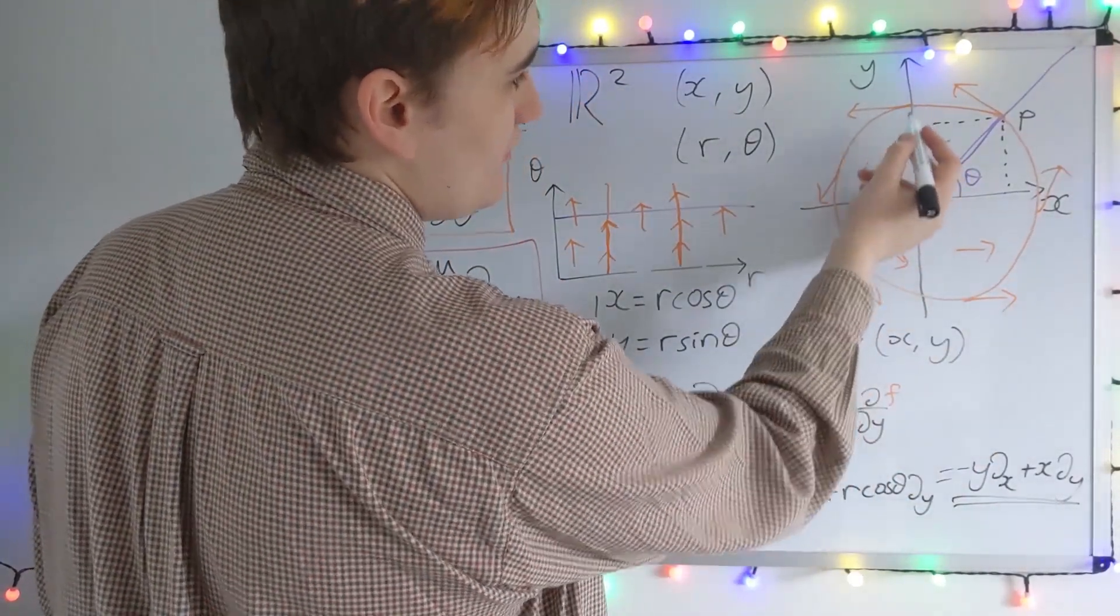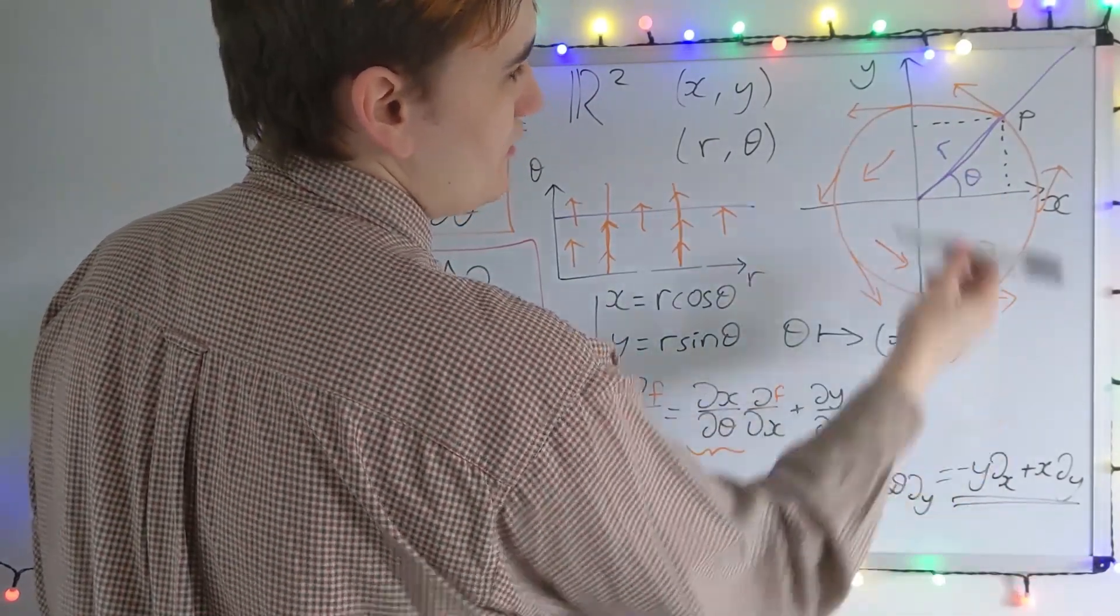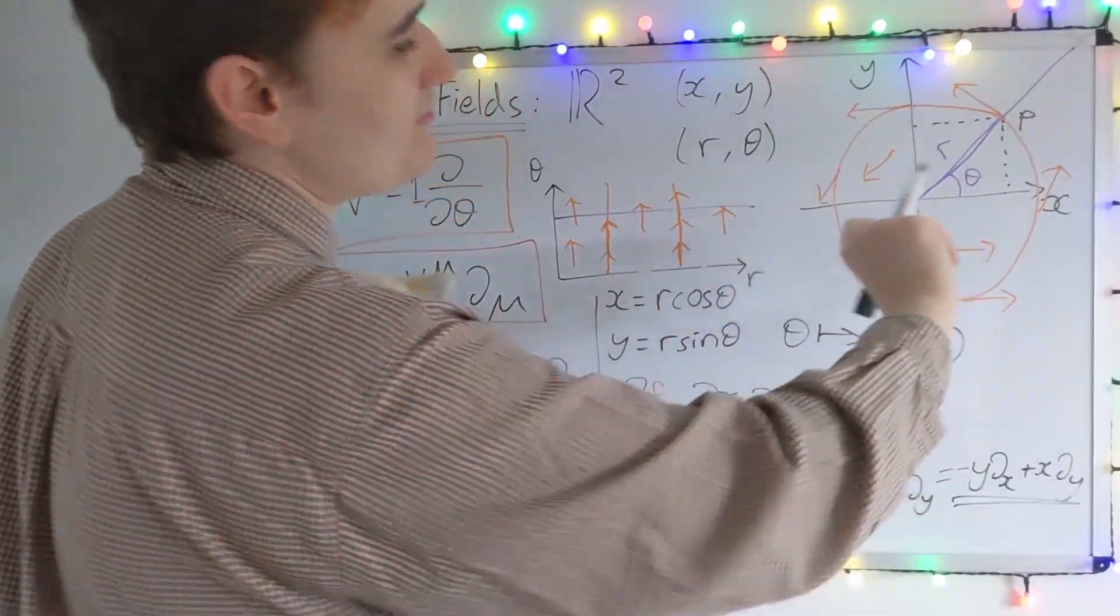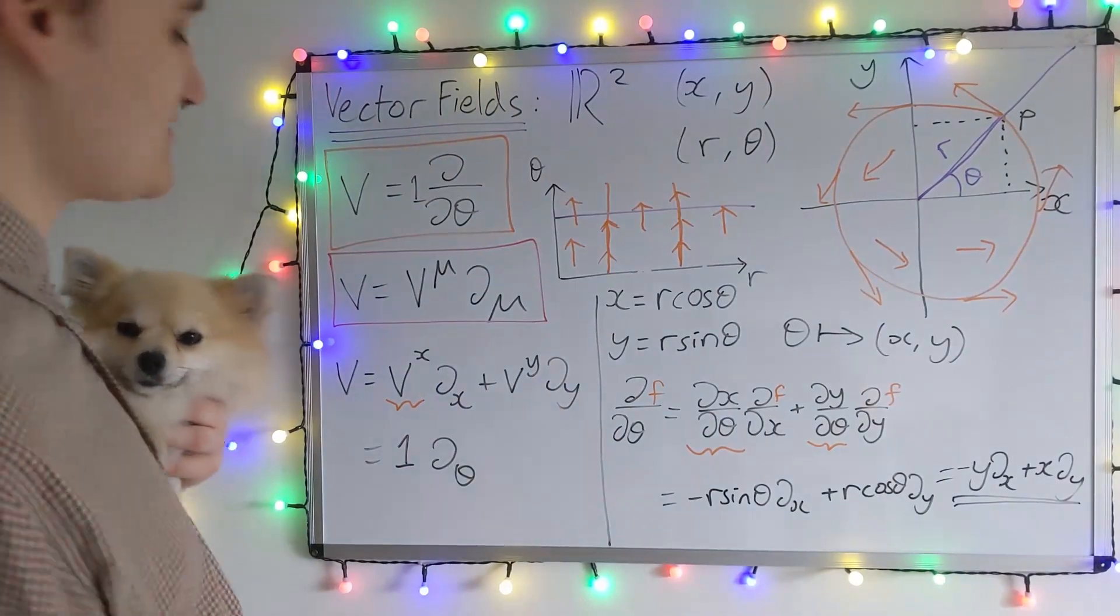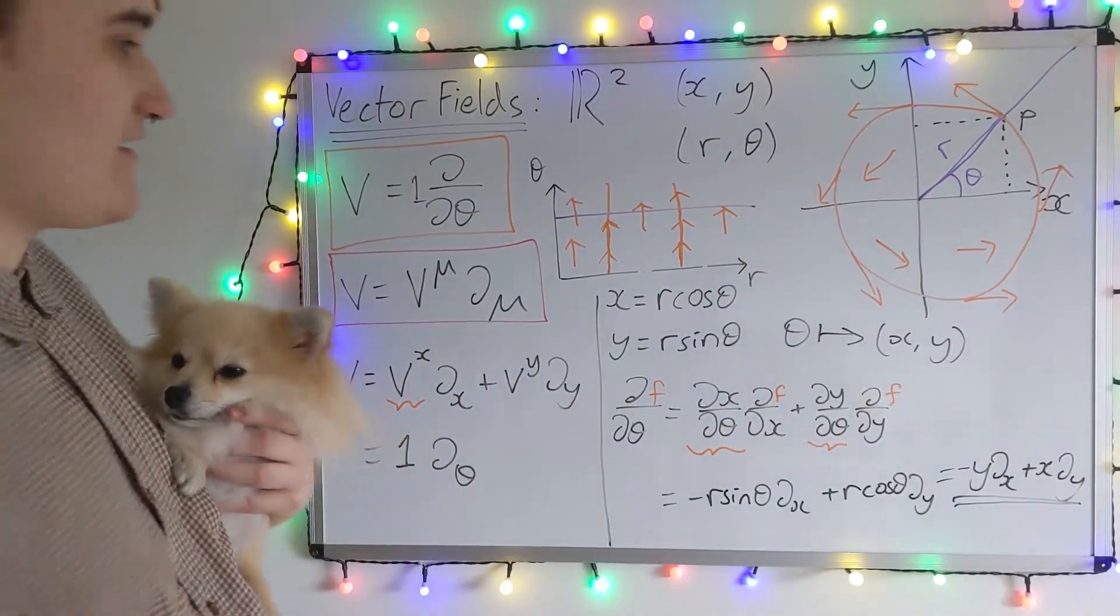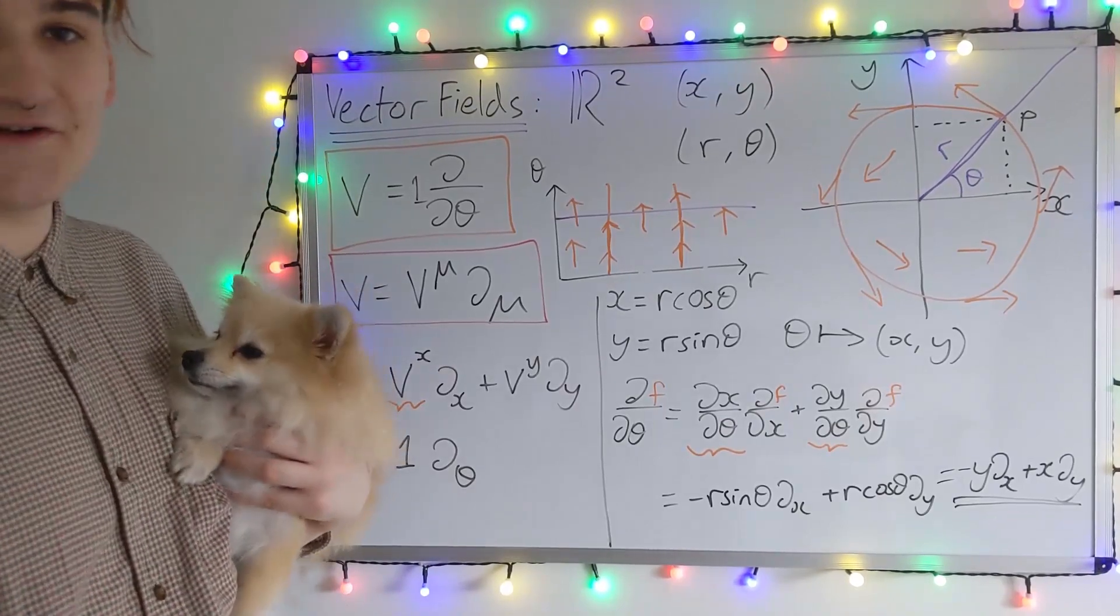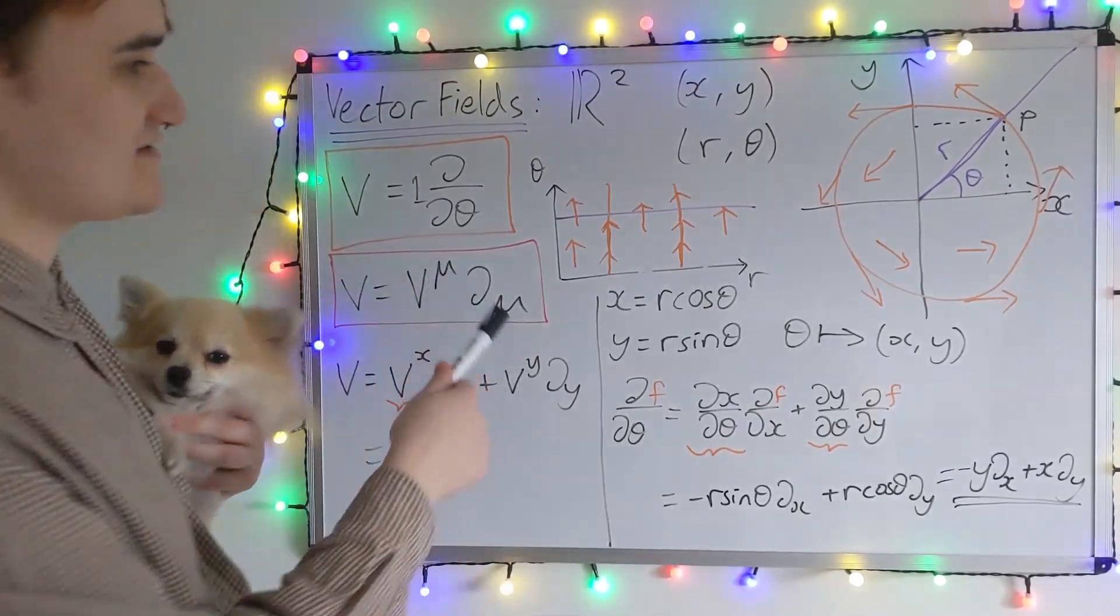Similarly, if we go up to here, Y is 1, X is 0, we just have a vector pointing along negative D by DX. So we can see that everywhere in the plane we're going to be pointed along the D by Dθ direction. So, okay, hopefully this fairly simple example has been illuminating for you in how we see and think about vector fields in different coordinate systems.